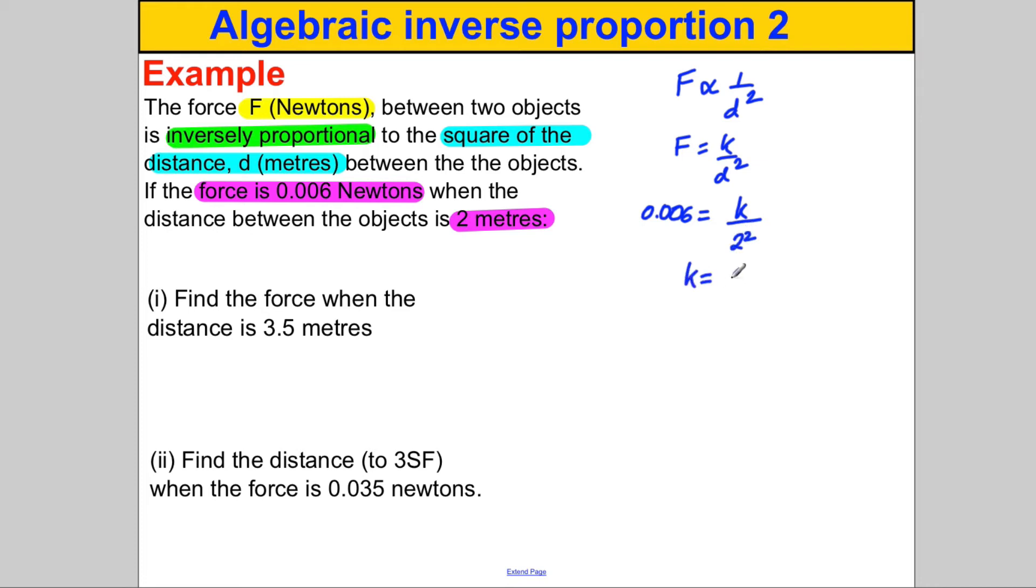If we work that out, K must therefore be 0.006 multiplied by 2 squared, which is 4. And if you work that out, you get yourself that K must be equal to 0.024. So we can state our formula: F is therefore equal to 0.024 divided by D squared. And that formula we're going to use henceforth.